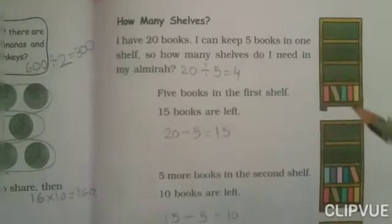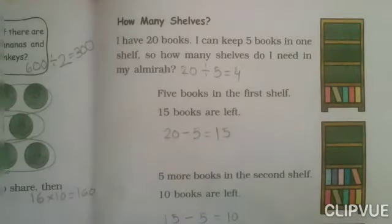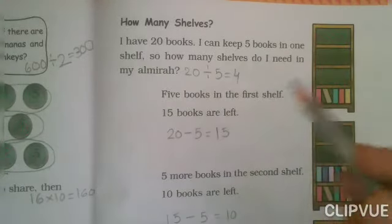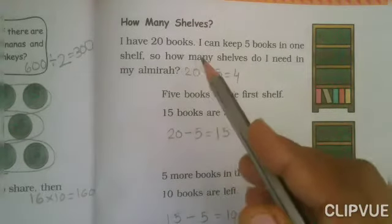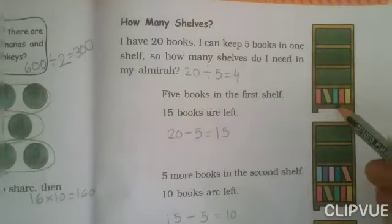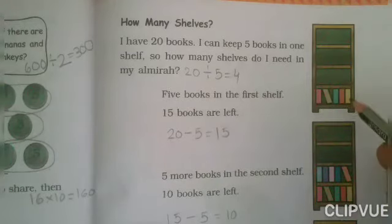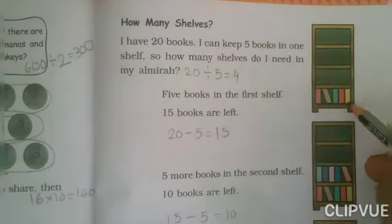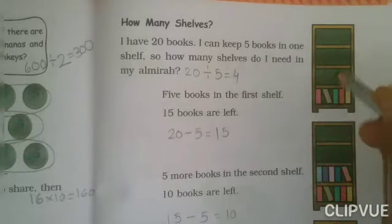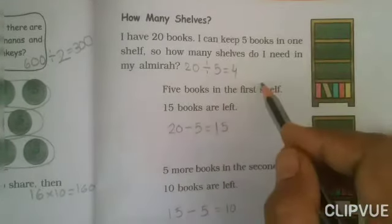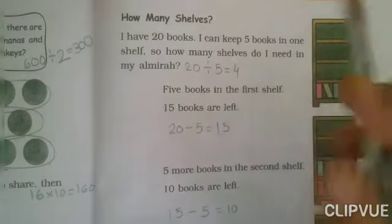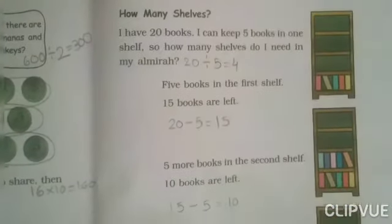One cupboard is given — just like at your home you have a cupboard for your textbooks, books, and clothes. Some instructions are given that we need to follow. I have 20 books and I can keep five books on one shelf. So how many shelves do I need in my cupboard? If we use the division method directly: 20 divided by 5 equals 4.